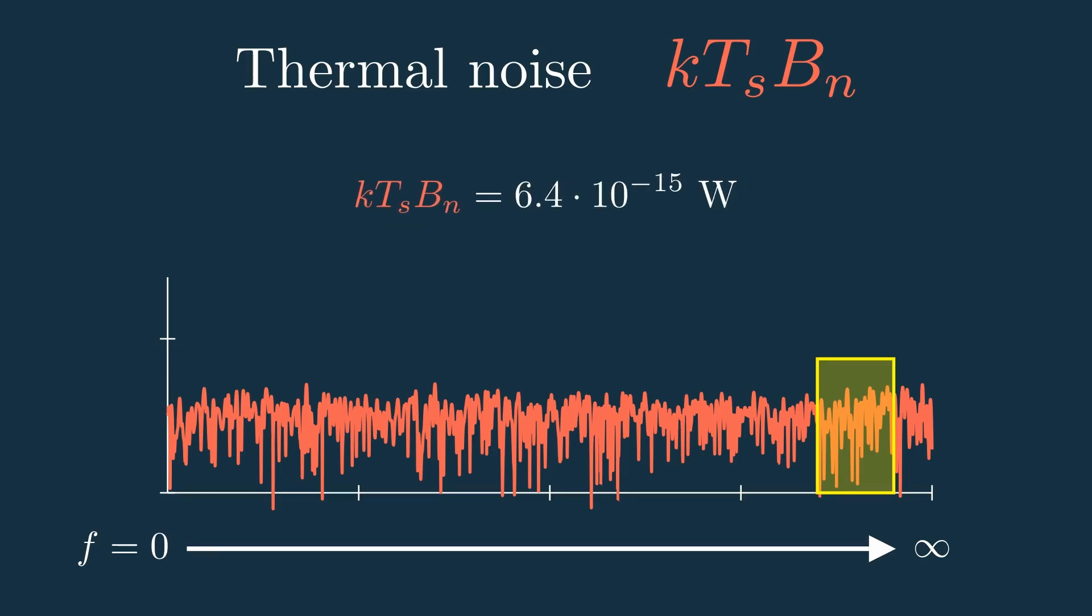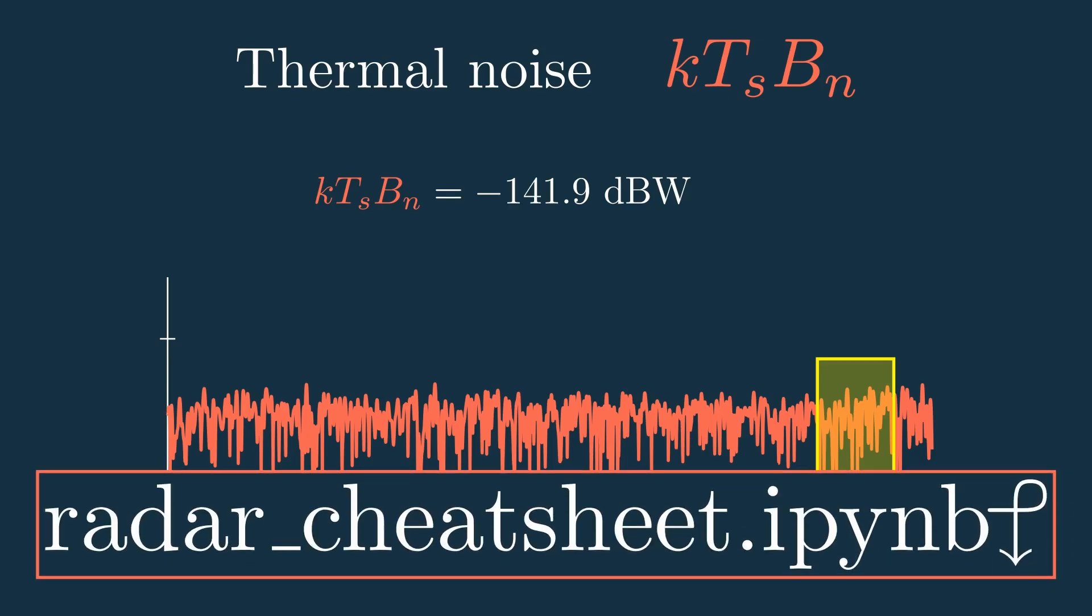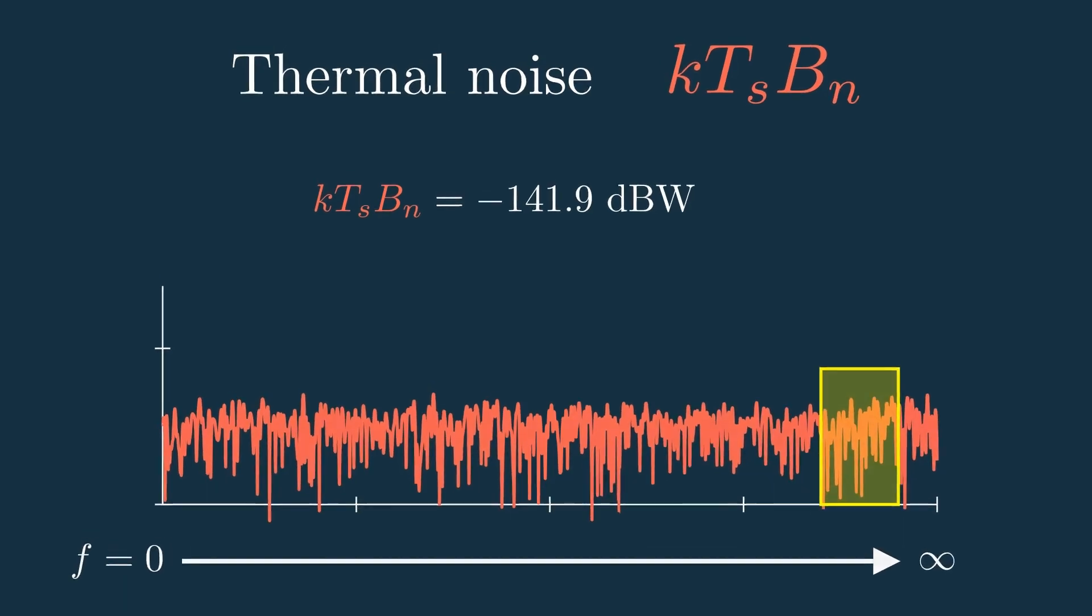But since this is such a tiny number, we'll usually express it in dB, so we would get negative 141.9 decibels relative to 1 watt, or dBw. And if you're not familiar with the decibel scale, check out the python notebook in the description where you can play around with these equations and learn about decibels. And that's the thermal noise.